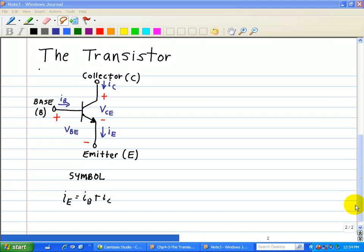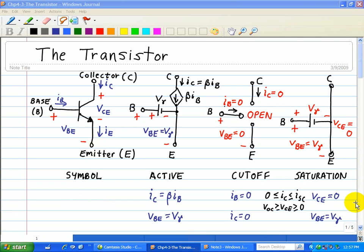The BJT's large signal model is defined in terms of input signals IB and VBE, and output signals IC and VCE. For the BJT shown here, the model applies to a region in which these signals are never negative. Within this region, there are three possible operating modes: the active region, the cutoff region, and the saturation region.